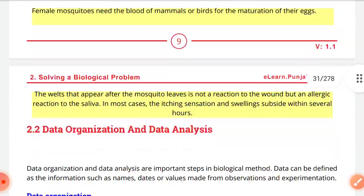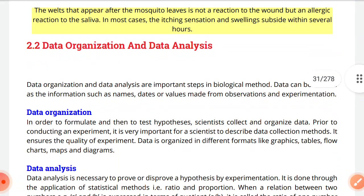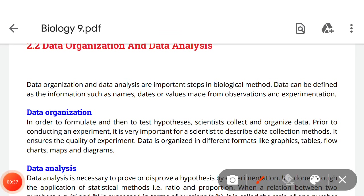We have to start the topic of data organization and data analysis. This is very important in biology, so we will discuss today how important it is. Data organization and data analysis are important steps in biological method. Data can be defined as information such as names, data, or values made from observations and experimentations.